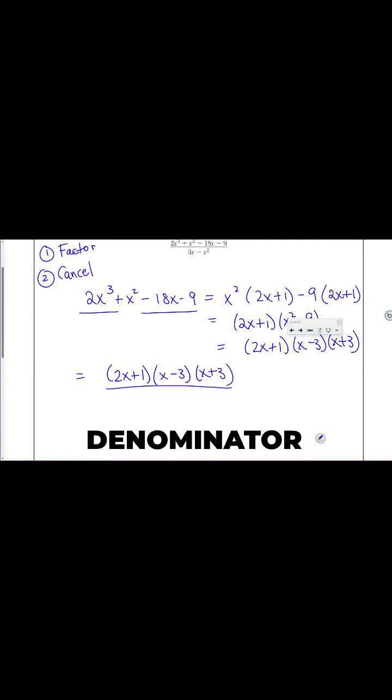Now, the denominator, 3x minus x squared, can be factored as x times 3 minus x.